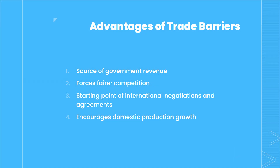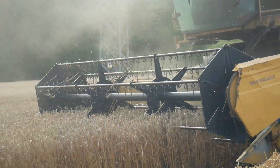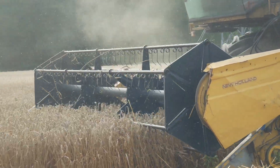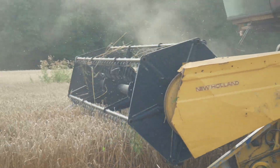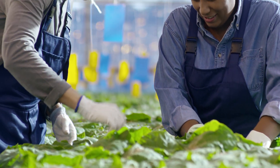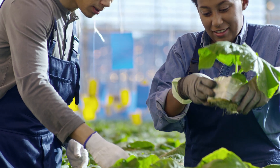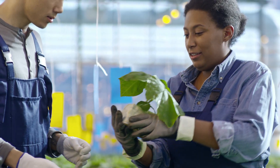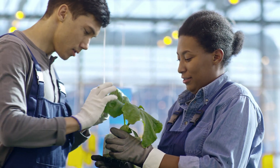The last advantage, and arguably the most important, is that trade barriers often stimulate and encourage domestic production growth. Tariffs raise the price of imported goods, and according to the law of demand, this reduces demand for imports. Consumers then increase their demand for domestic goods, which encourages domestic producers to increase output. This ultimately creates more income and jobs for the domestic economy — support that is essential especially in strategic and emerging industries.